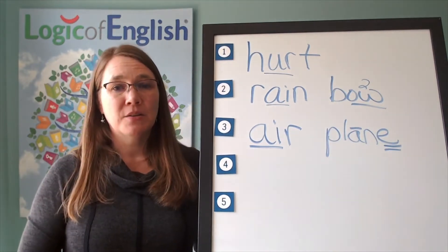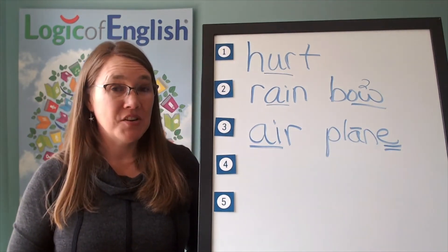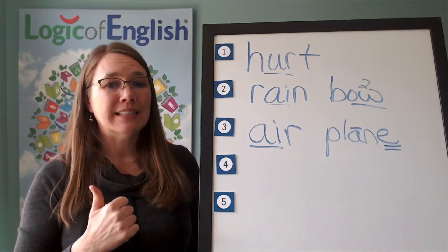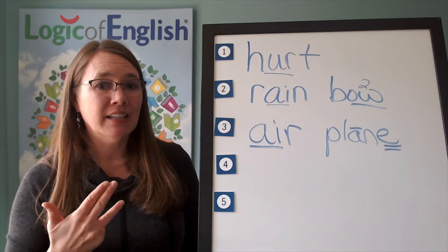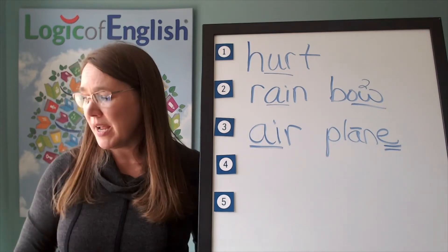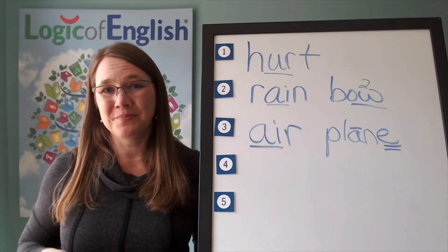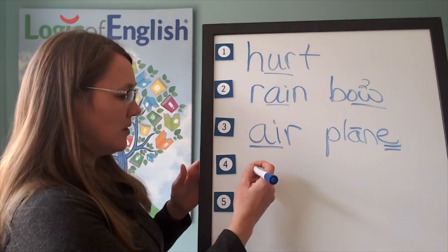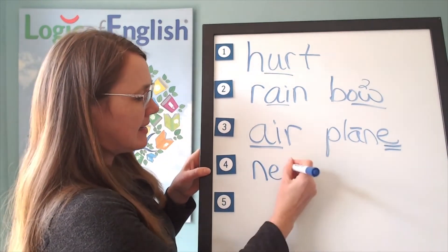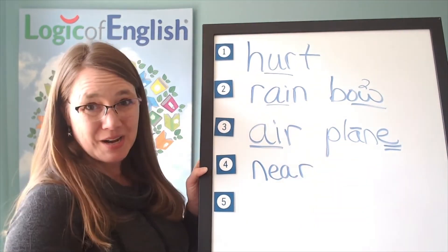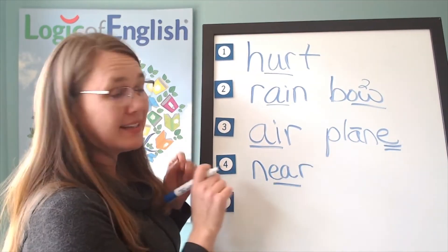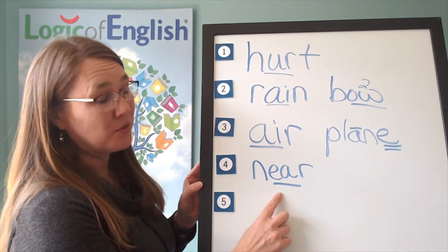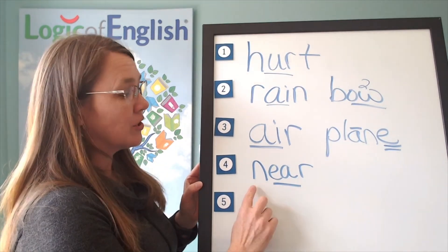The next word is near. We are getting near the end. Near. Go ahead and say near. Let's sound it out. N, E. This is an E at A. Er. Go ahead and write near. Near. Very good. Now help me to write it. N, E, Er. How will we mark it? We'll underline the E. And what sound of E, A, A is that? It's the first sound. N, E, Er. Near.